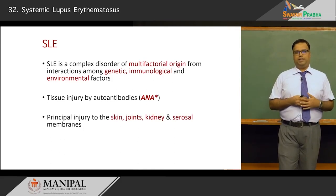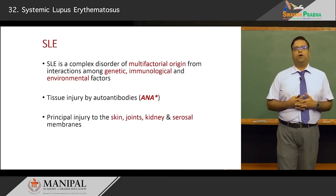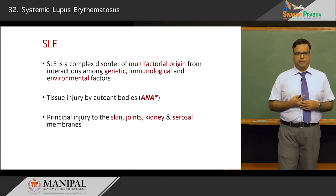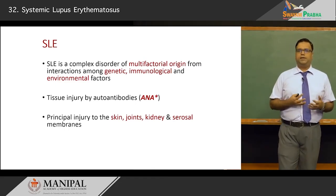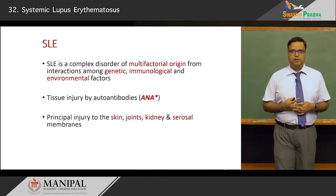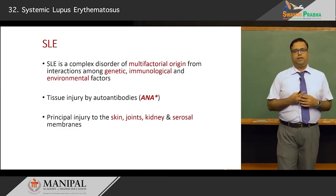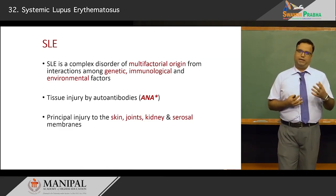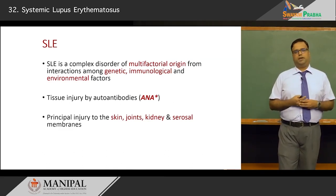There is principal injury to a multitude of tissues in the body. Chief amongst them are the skin, the serosal surfaces such as the joints, the kidney, and other membranous areas. We will have a look at these in the pathology section.